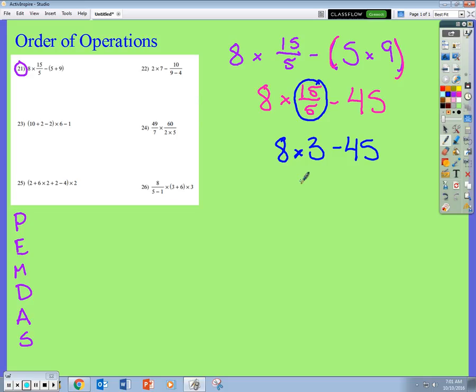8 times 3 is 24. Again, my fluency, my math facts. Now I have 24 minus 45.